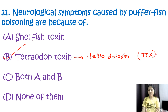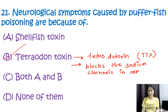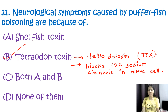Tetrodotoxin (TTX) is the primary toxin responsible for neurological symptoms associated with puffer fish poisoning. This potent neurotoxin blocks sodium channels in nerve cells, leading to paralysis or other neurological effects. Shellfish toxins are not associated with the neurological symptoms specifically related to puffer fish poisoning. The correct option is B, tetrodotoxin.